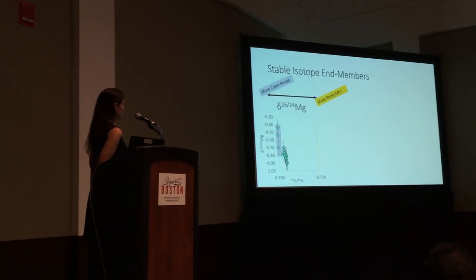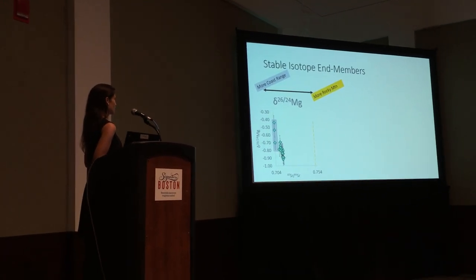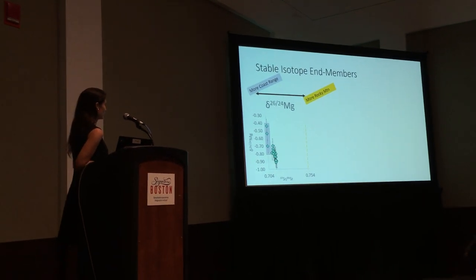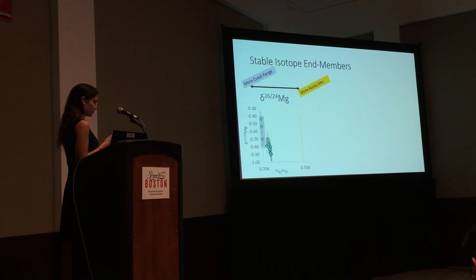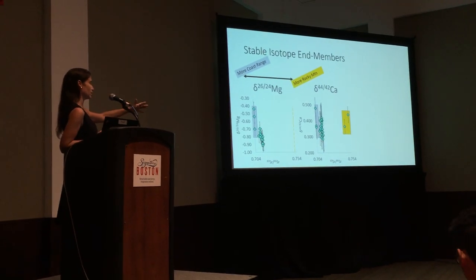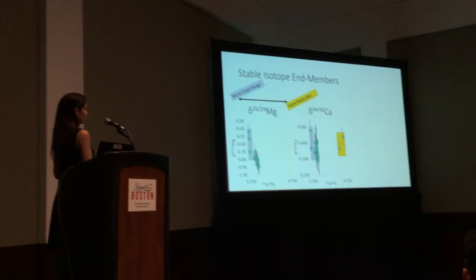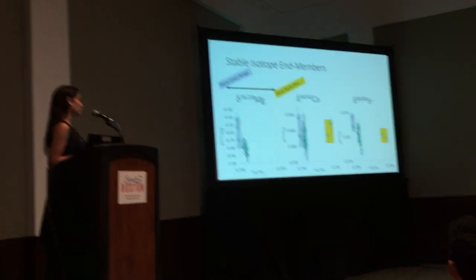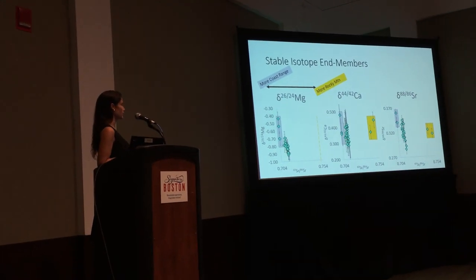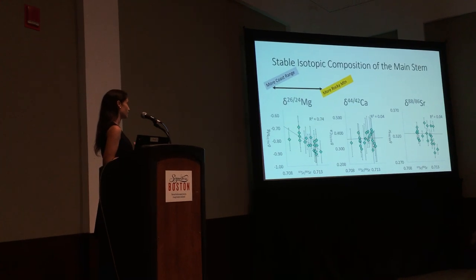Now diving into how stable isotopes actually compare with the radiogenic strontium signature. Stable isotope end members are plotted in gray and yellow, with radiogenic strontium on the x-axis and stable magnesium on the y-axis. We have the Chocolatin tributary and time series samples—I don't actually have the magnesium isotope values for the Rocky Mountain samples yet, but those are forthcoming. For calcium isotopes, we don't really have much differentiation between the two end members, which is probably why we don't see much variability in the seasonality of that system.